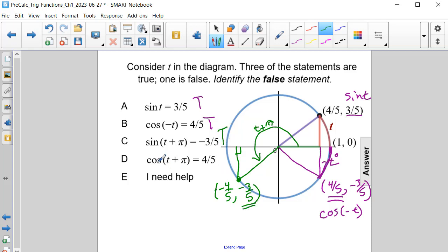This is true. Now let's look at the cosine of t plus pi. That corresponds to the x-coordinate here. The cosine of t plus pi is negative four-fifths, not positive four-fifths. So choice D is our false statement.